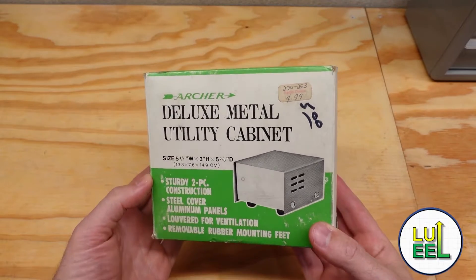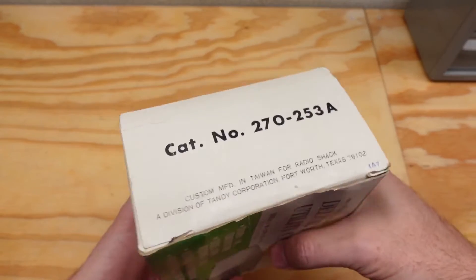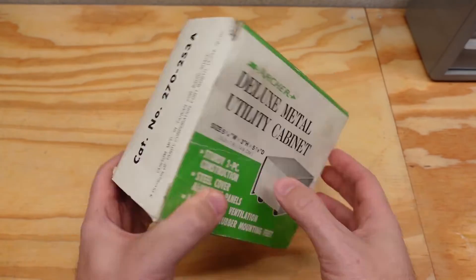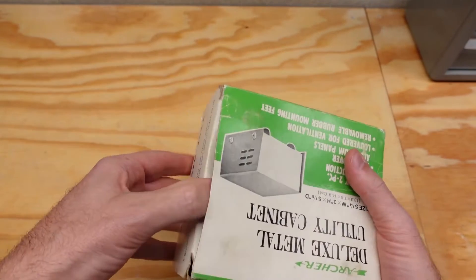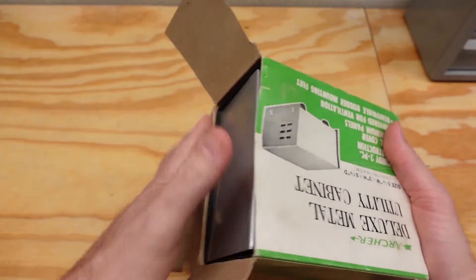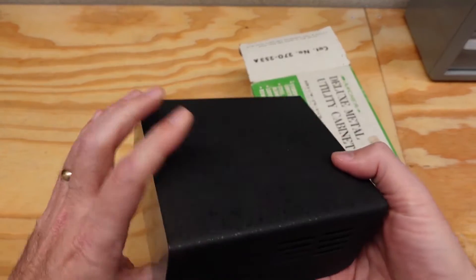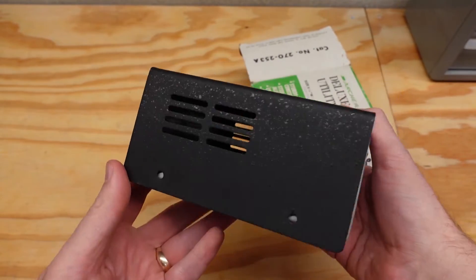All right, it's time to put this project into a case. This one here is a classic Archer design that I picked up at a ham fest, along with several other Radio Shack specials. I'd really like to use a metal one for this project to have it somewhat shielded, so this guy will work just fine. It's more than likely a few decades old, but it's still in pretty decent shape. I do like the black wrinkle finish on the cover. It looks pretty sharp.